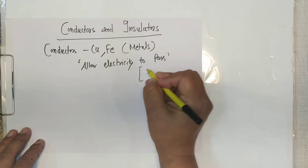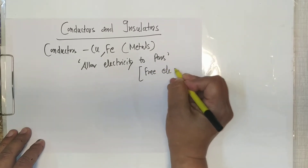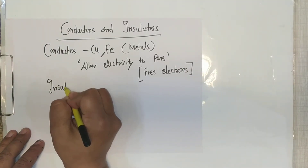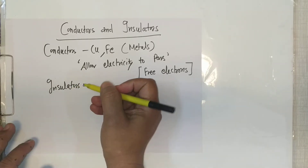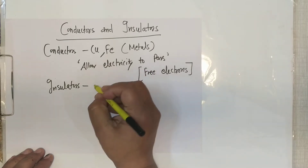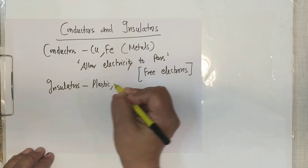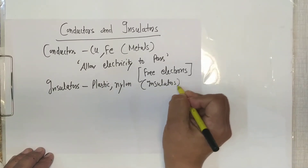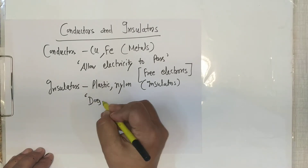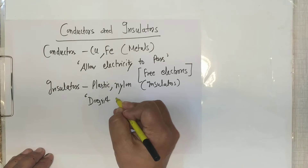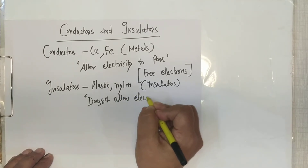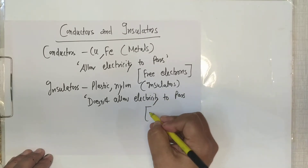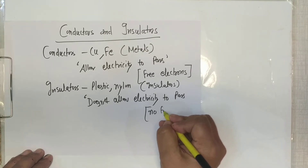Conductors have free electrons as charge carriers. The next category is insulators. Insulators don't pass electricity — generally plastic and nylon are insulators. They don't allow electricity to pass and have no free electrons.